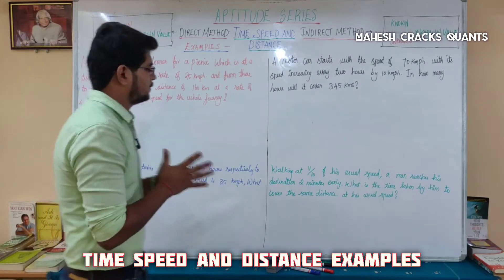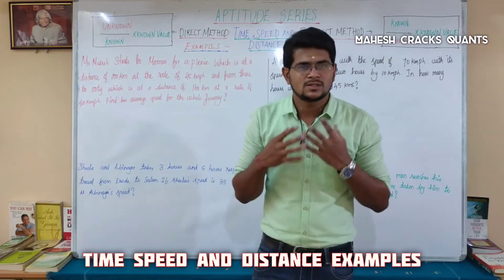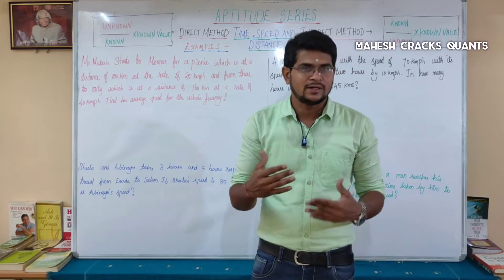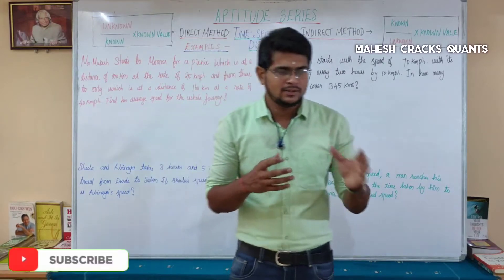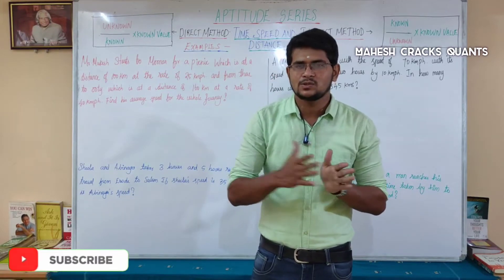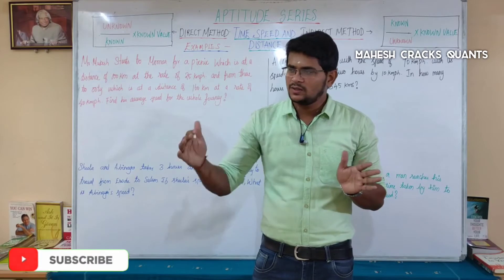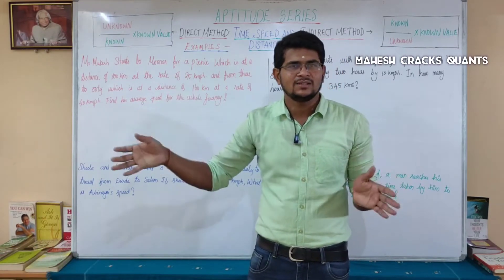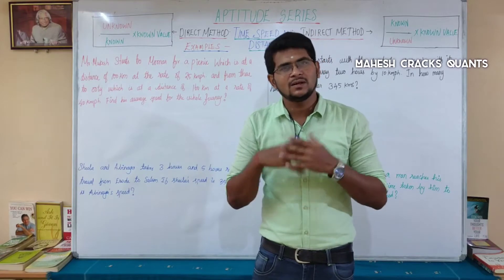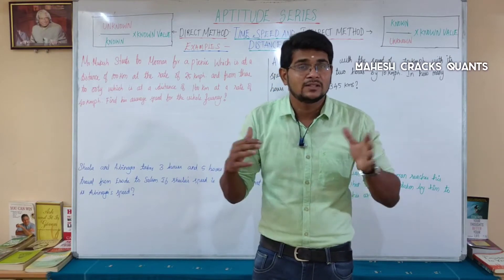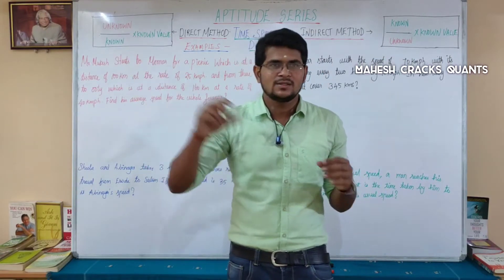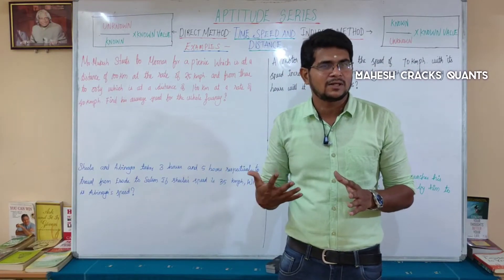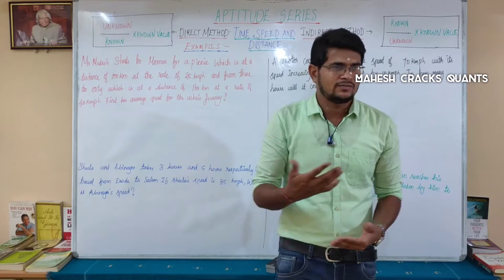Find his average speed for the whole journey. What is the average speed? The formula is: total distance divided by the total time taken. If we have the distance and the time taken, we can use that formula.